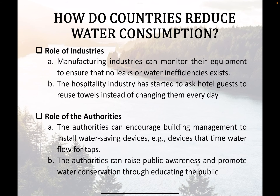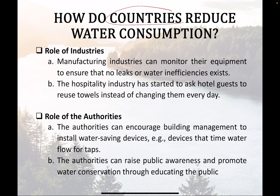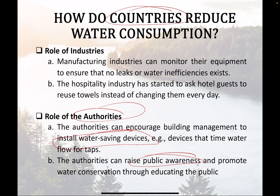How can countries reduce water consumption? The most natural approach is regulation — authorities can come in and regulate usage. You can also raise public awareness and encourage people to install water-saving devices, such as the waterproof bag you can place in a toilet cistern or the tap flow regulator that slows water flow, both of which the NEA has promoted.